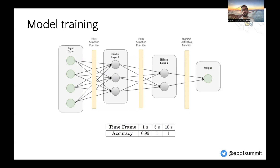After several tests with different configurations, we adopted a model with two hidden layers. In each layer, the ReLU function is used, and the sigmoid function is employed at the end. With this, we obtained good results, aggregating the data in windows of 1, 5, and 10 seconds.